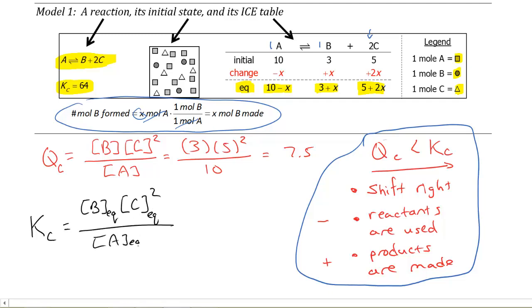What I can say from this is that K sub C equals B at equilibrium times C at equilibrium squared divided by A at equilibrium. But you know what? This is A at equilibrium, this is B at equilibrium, and this is C at equilibrium. So I can plug those in, and I'm going to have 3 plus x times 5 plus 2x. I have to square that. Don't forget, C is squared, C is squared, divided by 10 minus x.